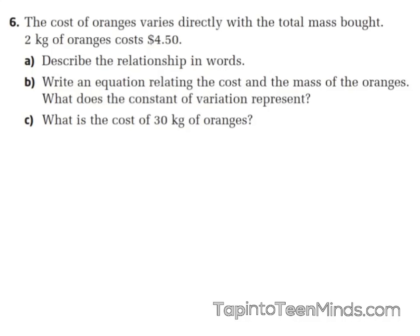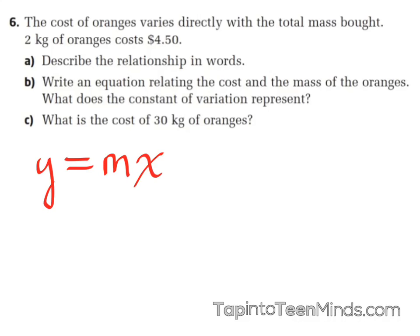Now it's asking us to write an equation relating the cost and the mass of the oranges, and what does the constant of variation represent? Hannah said: C equals 2.25k. Let's go back — what did you say earlier today? Y equals MX. So we'll start there. From yesterday, we're looking at an equation that tells us it's varying directly, so we know it's going to follow Y equals MX.